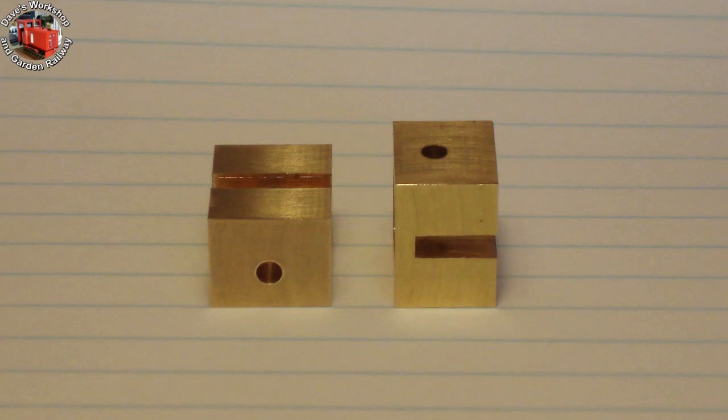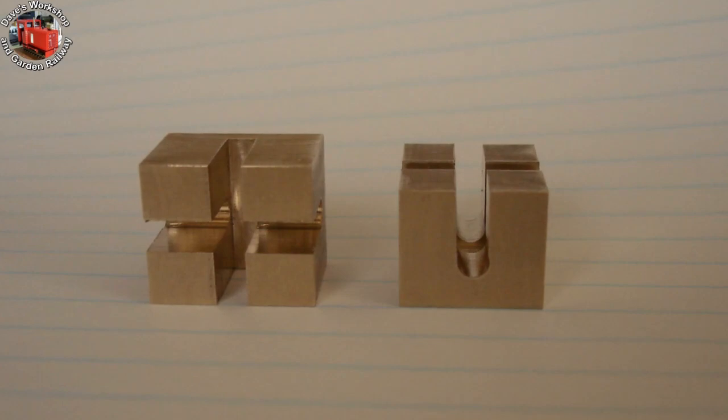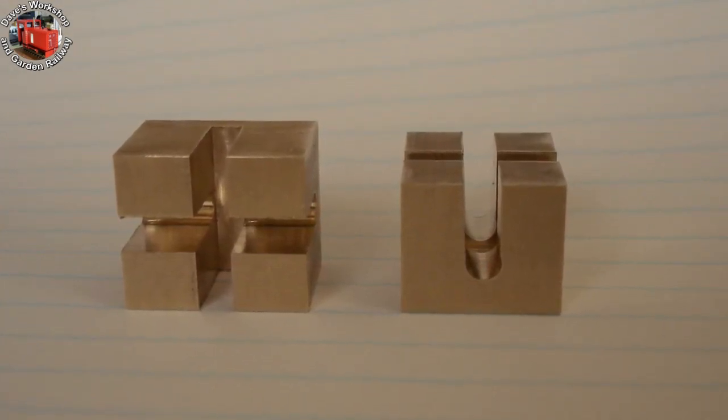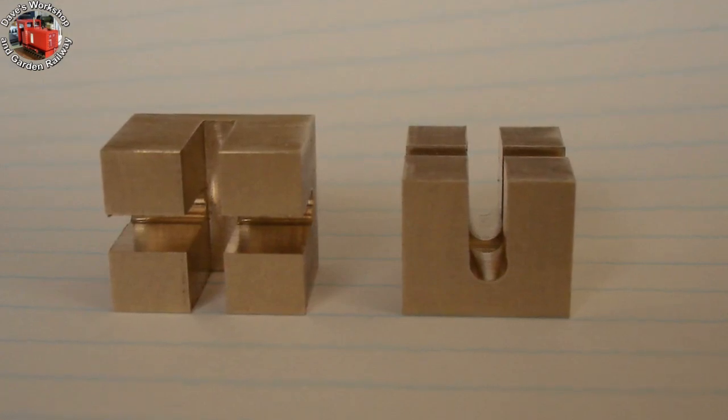That's a one-eighth hole for the valve spindle, slot milled to the hole to allow the valve to be able to move vertically on and off the port plate when needed.